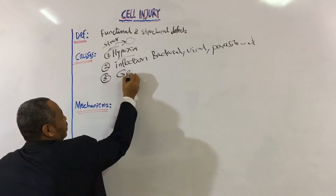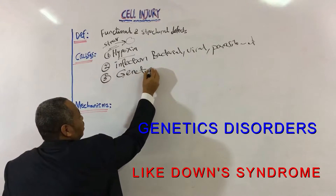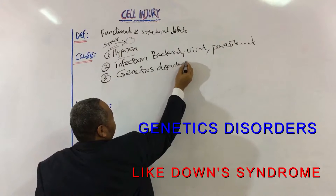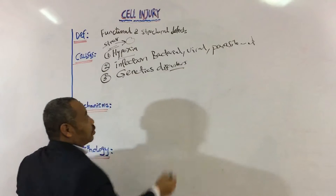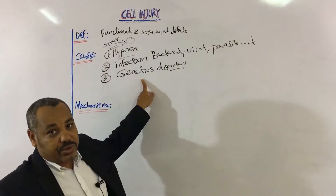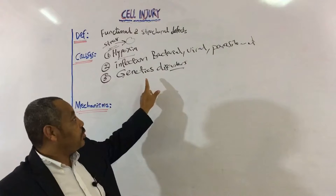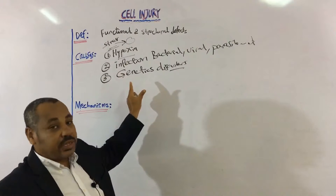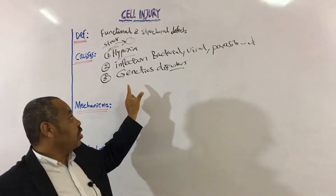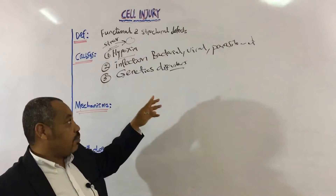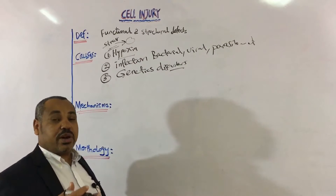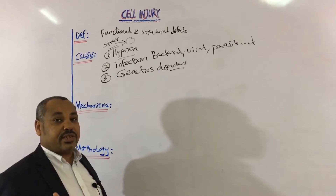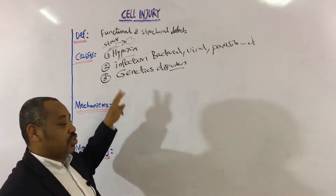Number three is genetic disorders. Genetic stress, like Down syndrome or Turner syndrome — all of these syndromes have some sort of genetic disorder and accordingly there is some sort of cell stress in the body. For example, Down syndrome patients are subjected to diseases like leukemia and other malignancies.